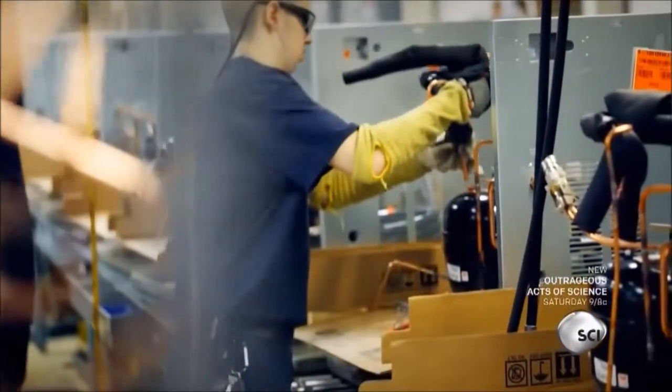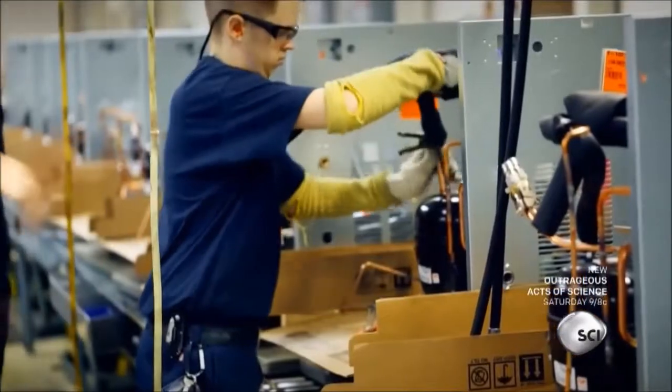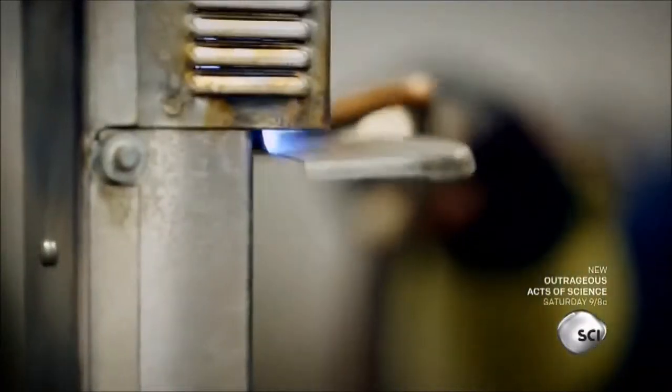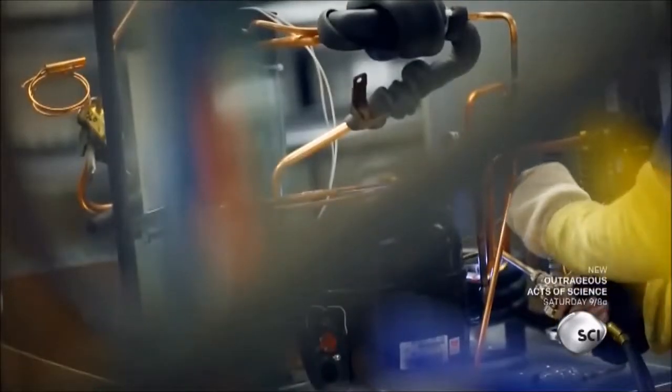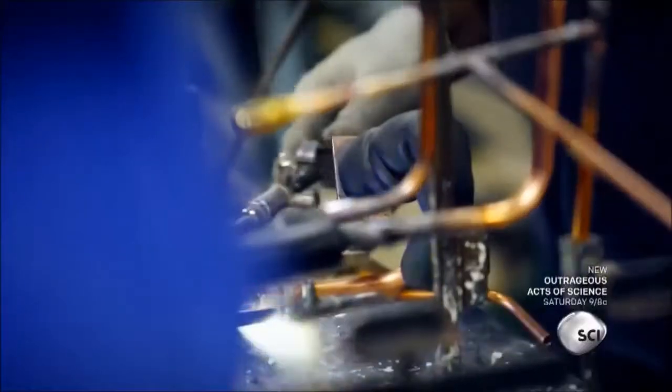Inside the ice maker, a 16-foot circuit of coolant-carrying pipes draws heat out of water. Welders carefully join copper tubes to seal off the loop.